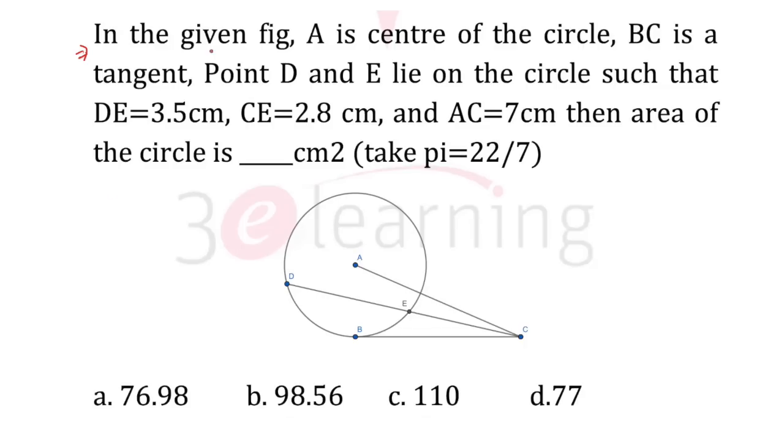The question is quite easy. We have A as the center of the circle, BC is a tangent, D and E lie on the circle such that DE is 3.5 cm, CE is 2.8 cm, and AC is 7 centimeters. We need to find the area of the circle, which means we need to find 22 by 7 into r square.